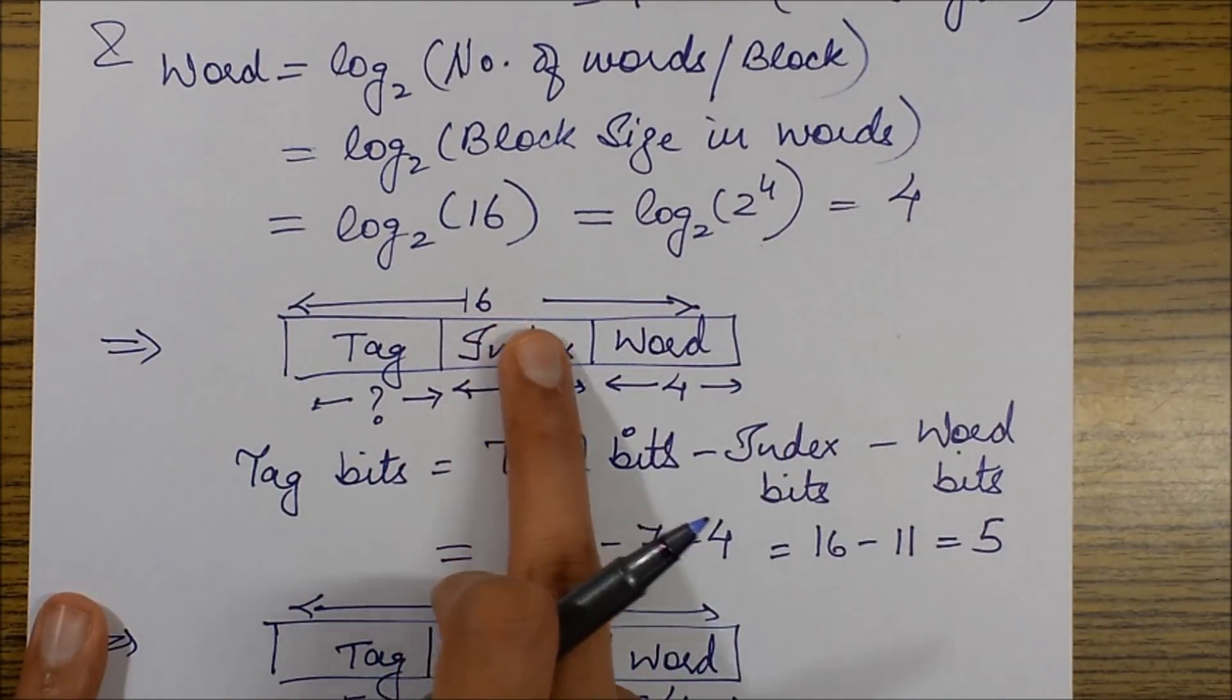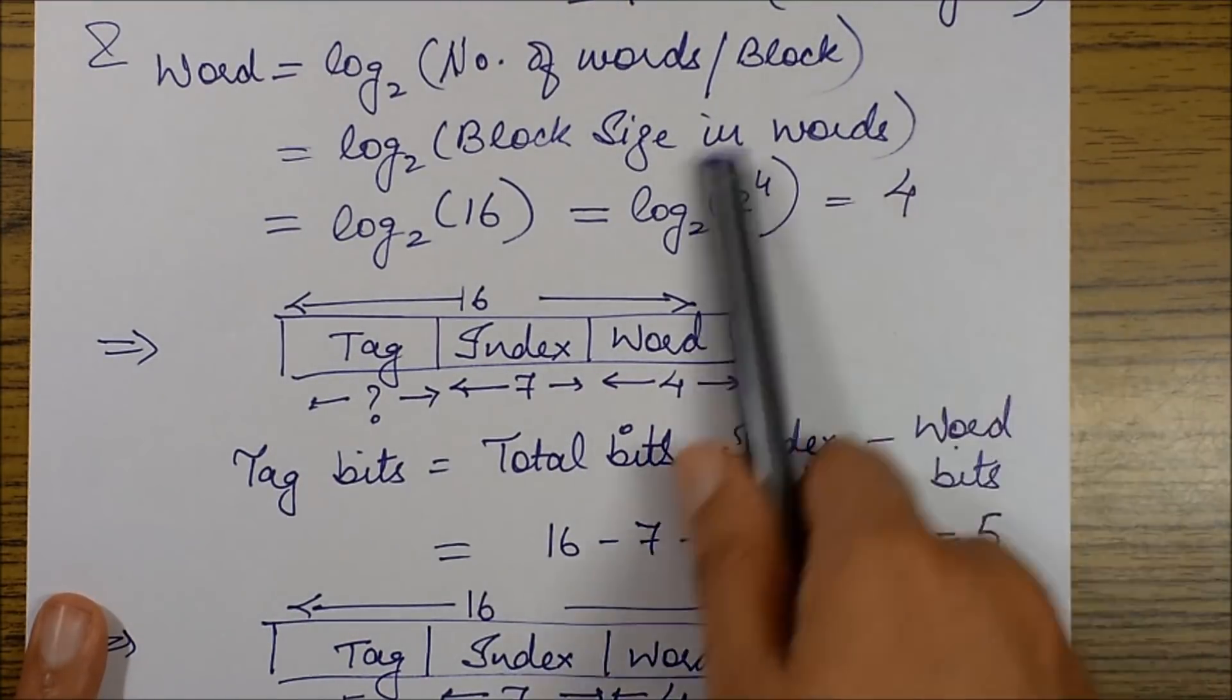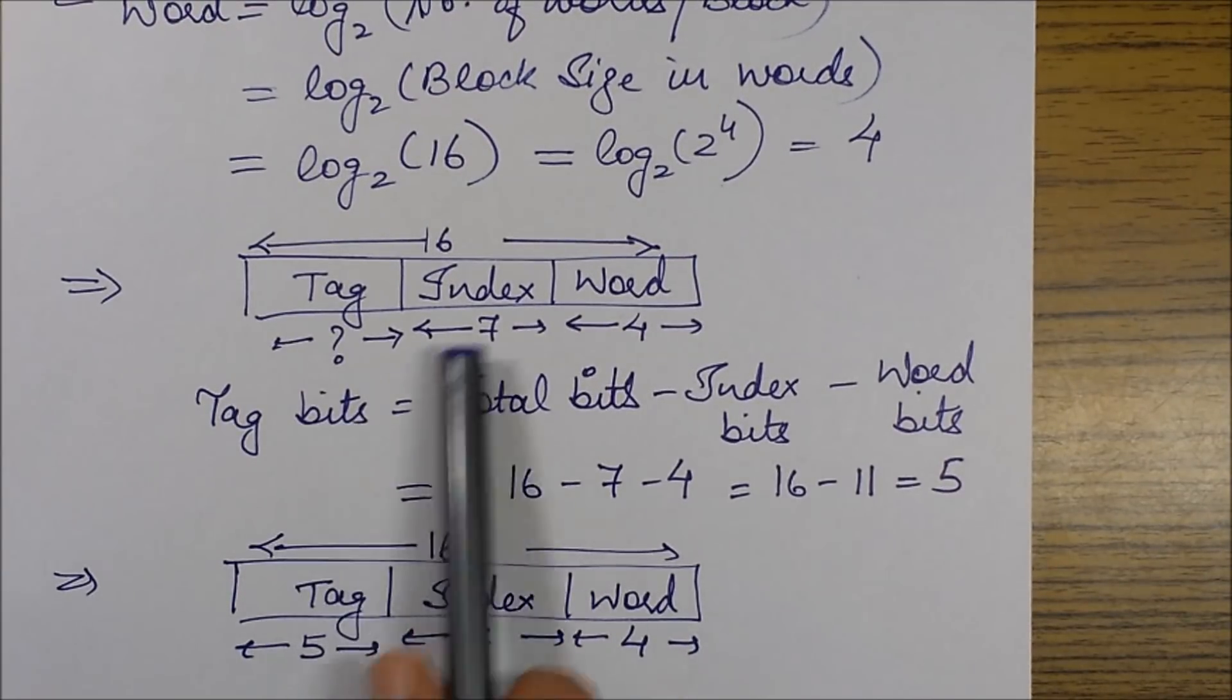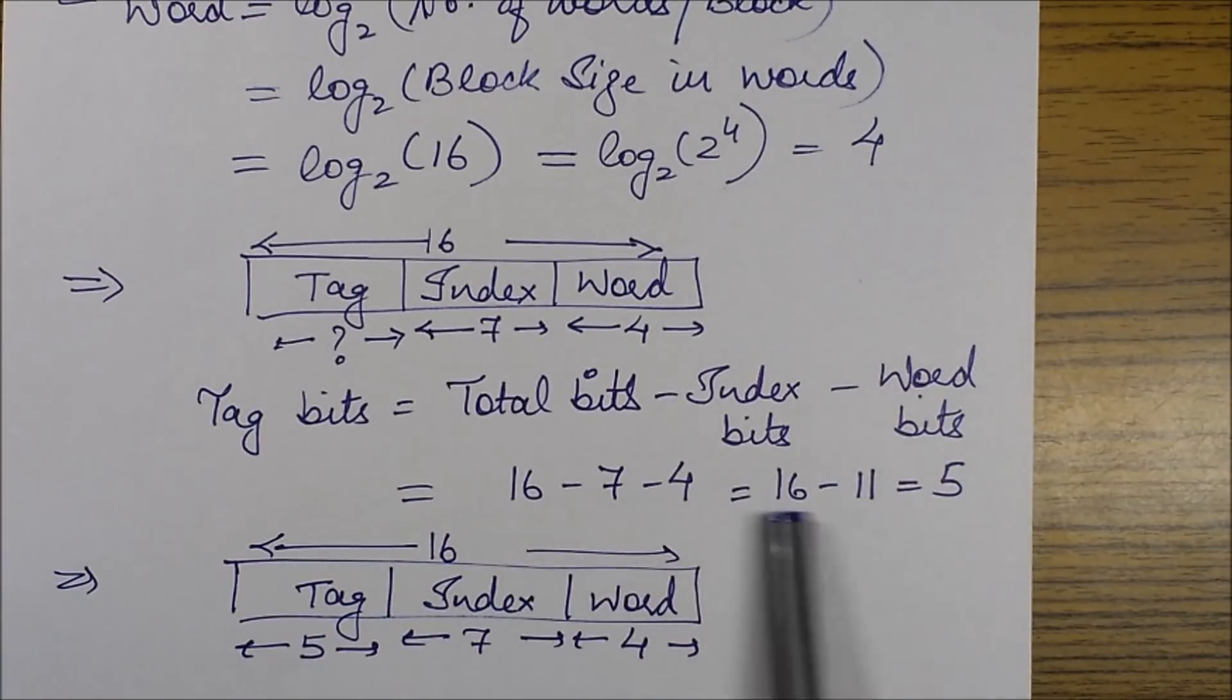If I fill out these fields, I get the total bits of main memory as 16, word bits as 4, index bits as 7. Finally, the tag bits can be calculated by using the formula: total bits minus index bits minus word bits, which comes out to be 5.